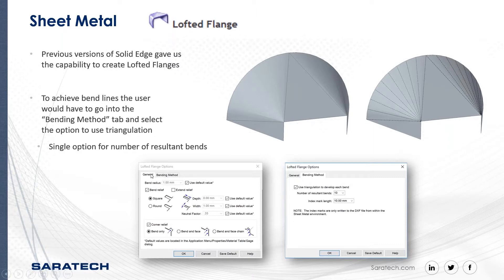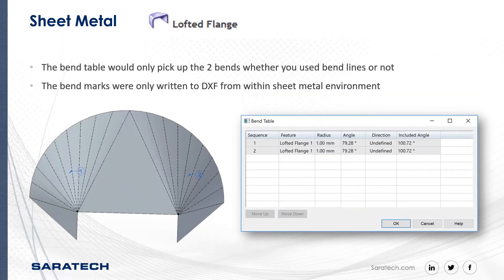Now with our locked flange options under general, this is what our picture looks like for our bend relief, the extend release, and the corner relief. Next, the bending methods — we have the use triangulation option. The bend tables would only allow you to pick up the two bends whether you use the bend lines or not, so the bend marks were only written within the sheet metal environment. Our bend table shows us our sequence: number one, number two — we can reorder those — and what our angles are.